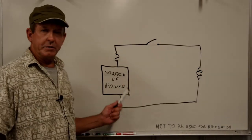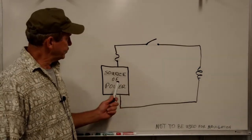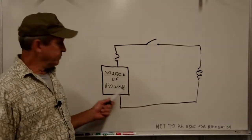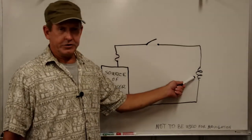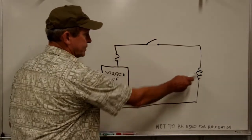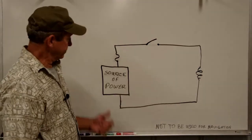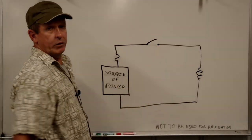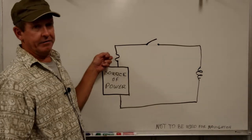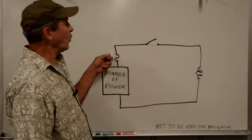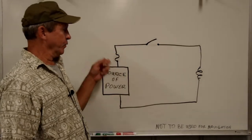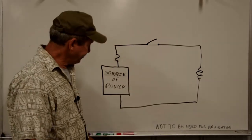We've got a really basic circuit here. We've got our source of power doing work for us with our device or appliance — work that we want done when we want it done. And we have a fuse in here so that if we get carried away, we can shut down the party.